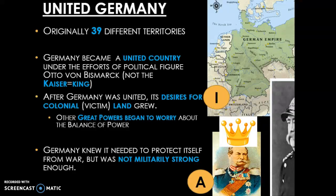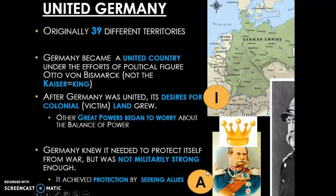So instead, we're going to see Germany practice alliances. If they can't defend themselves militarily, maybe they can gain big strong friends who can defend them. Go ahead and put an A in the last circle for alliances, because Germany is going to achieve the protection it needs by seeking alliances — finding friends who can protect it from the enemies it's creating through conquest.